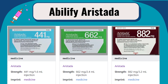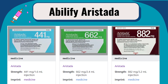The recommended starting dose of Abilify Aristata depends on the oral Abilify dose. If the patient's oral Abilify dose is 10 mg, the monthly Abilify Aristata dose is 441 mg. If 15 mg, the dose is 662 mg monthly, 882 mg every 6 weeks, or 1064 mg every 2 months. If 20 mg, the monthly dose is 882 mg.